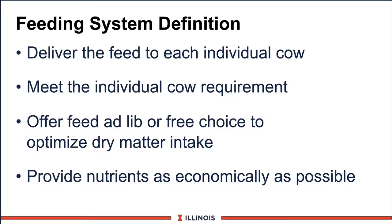Thirdly, we'd like to offer this feed free choice, or try to get this cow to be fed ad libitum so we can optimize dry matter intake. Historically, we said maximize dry matter intake, but on some farms we have to optimize it because some cows will eat too much and not economically convert it into milk and production. Fourthly, to provide these nutrients as economically as possible, keeping our feed costs and our income over feed costs as optimal as possible.